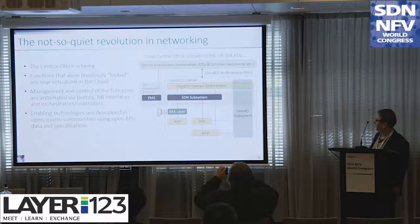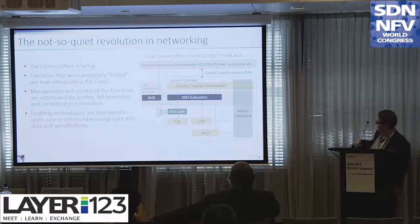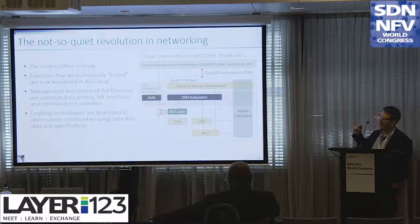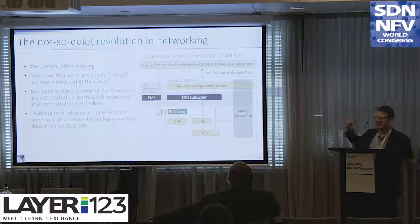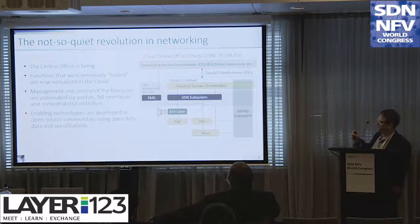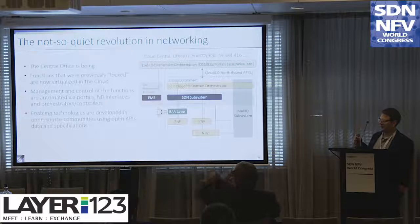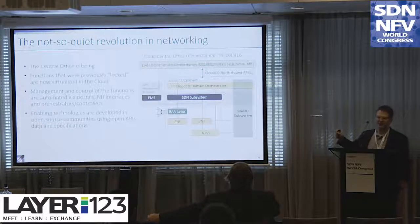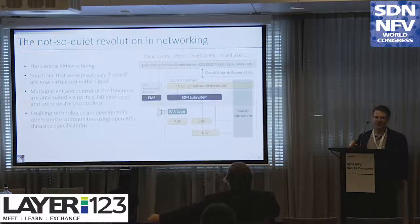These new technologies certainly create some dangers for the stability of the network, but there is a way through. On the right-hand side is the basic diagram for the cloud central office. The way we put the cloud central office idea together was to say — regardless of whether the boxes of functionality are white boxes, gray boxes, or black boxes — what we designed was something with open interfaces and a flexible framework where you could plug in what you wanted. If you want a pod of CORD in certain parts of the network you could, or you could plug in VNFs from Huawei, Nokia, or any other vendor.